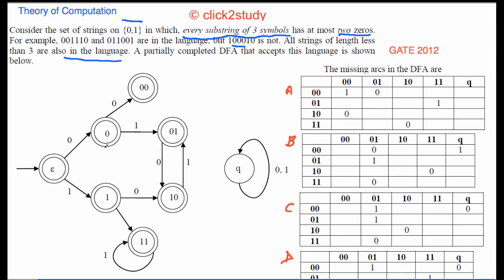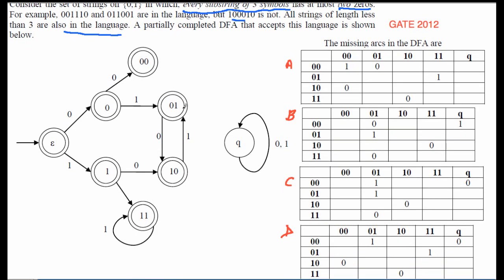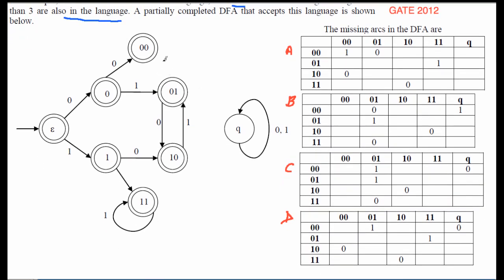Looking at the DFA: starting from the initial state, reading zero brings you to one state, reading one brings you to another, reading another zero moves further, and so on. The labels given to the states tell us how many consecutive zeros have been recorded so far — that's the key information to track.